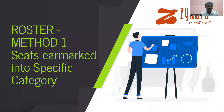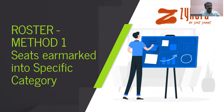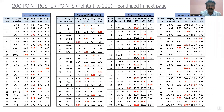We'll quickly look at the methods that are used. Method one would be part of this video, part two, and method two would be part of the part three video. Method one is followed by MCC in its counseling. This is a method where seats are earmarked into specific categories. You have a seat matrix which mentions, for this institute and this course, there are X seats under UR, four seats under SC, three seats under EWS, etc. Each candidate is then allotted as per rank — the first ranker is allotted first if a seat is available, and so on.